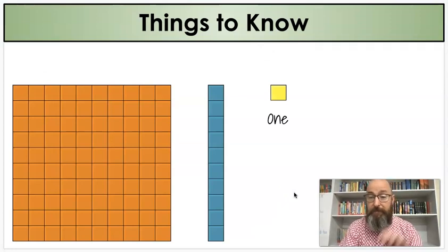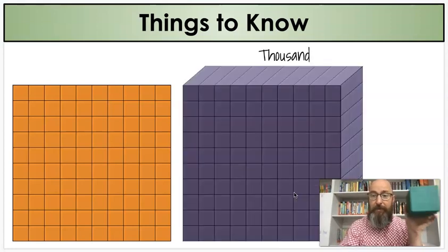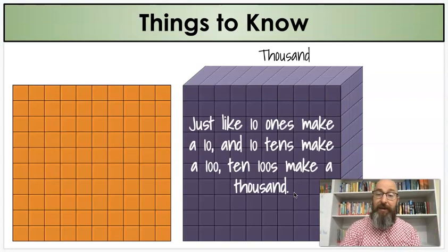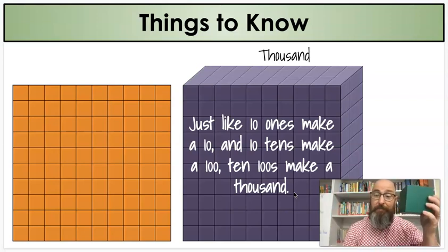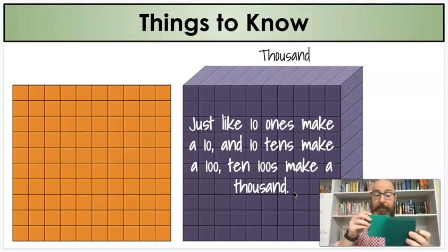And, of course, a one, a ten, a hundred. Now we have a thousand. That's the big block. This is worth a thousand. And just like ten ones make a ten, and ten tens make a one hundred, ten hundreds make a thousand. So you could stack these ten times and make this cube, this 3D shape, and it's worth a thousand.